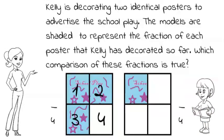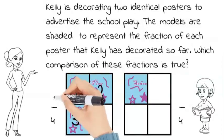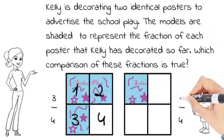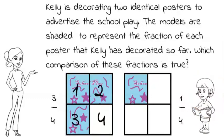These fractions have the same denominator. So now let's look at the numerators so we can compare the fractions. How do we know what the numerator is? The numerator is the top number — it's the number of shaded parts. The fraction on the left has three shaded parts, so the numerator is three. The fraction on the right has one shaded part, so the numerator is one.